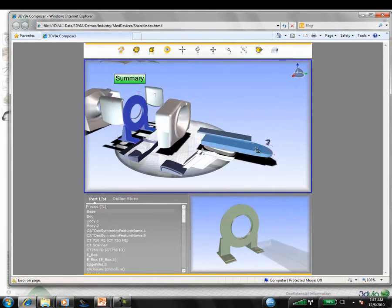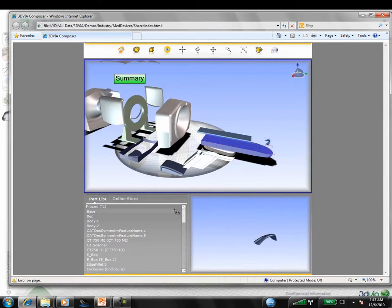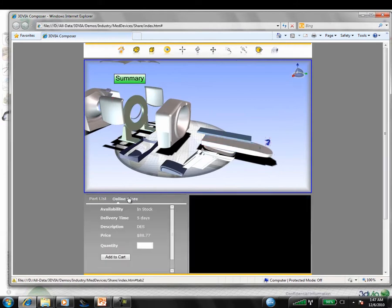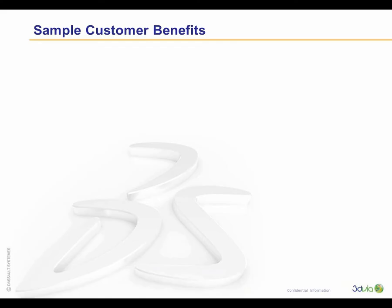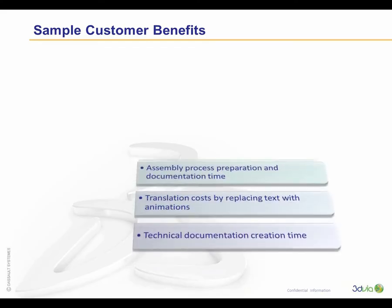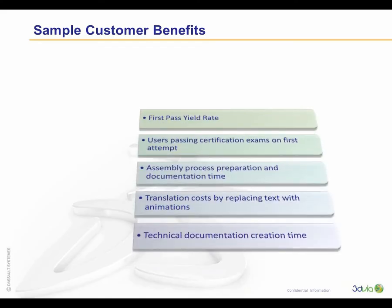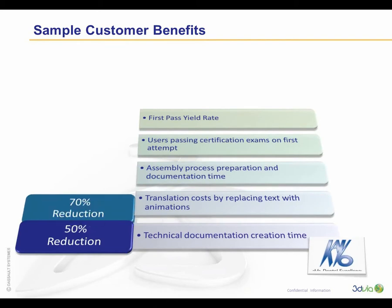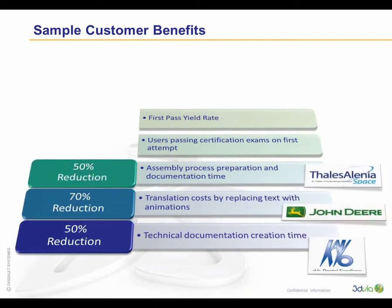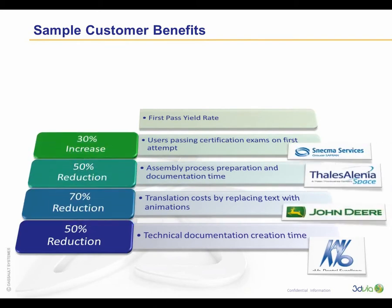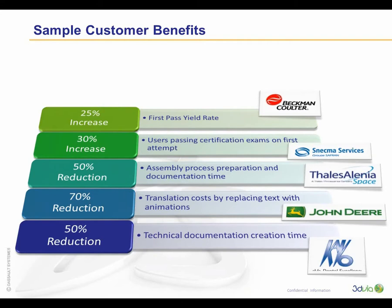Here, the user selects by geometry or by part number and gets the information they need to order the parts, as shown in this example of a spare parts catalog. The benefits of interactive 3D communications using 3D Via Composer are clear. Across industries, company sizes, and use cases, the savings are phenomenal, and these improvements are repeatable. They have been reported again and again by our customers around the world.